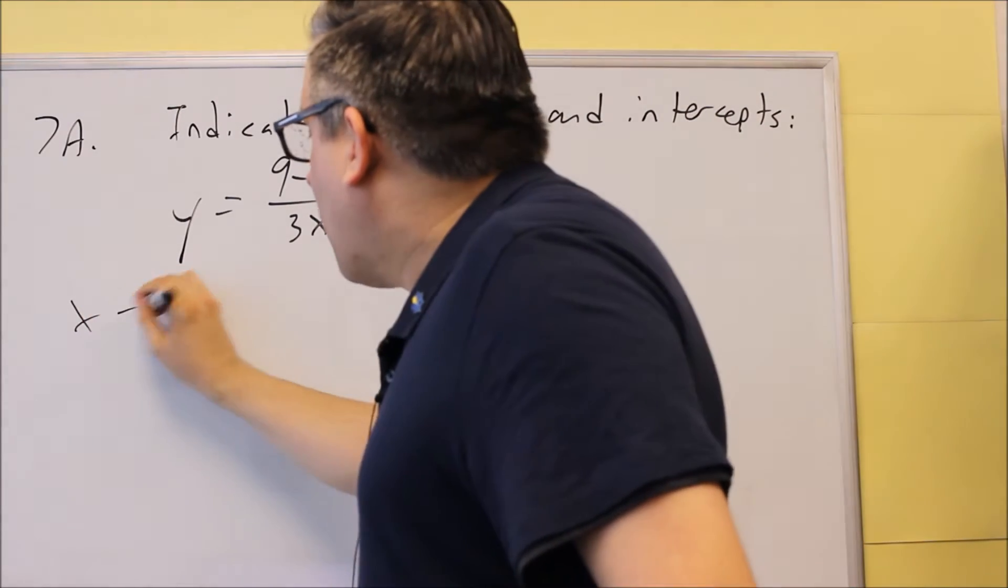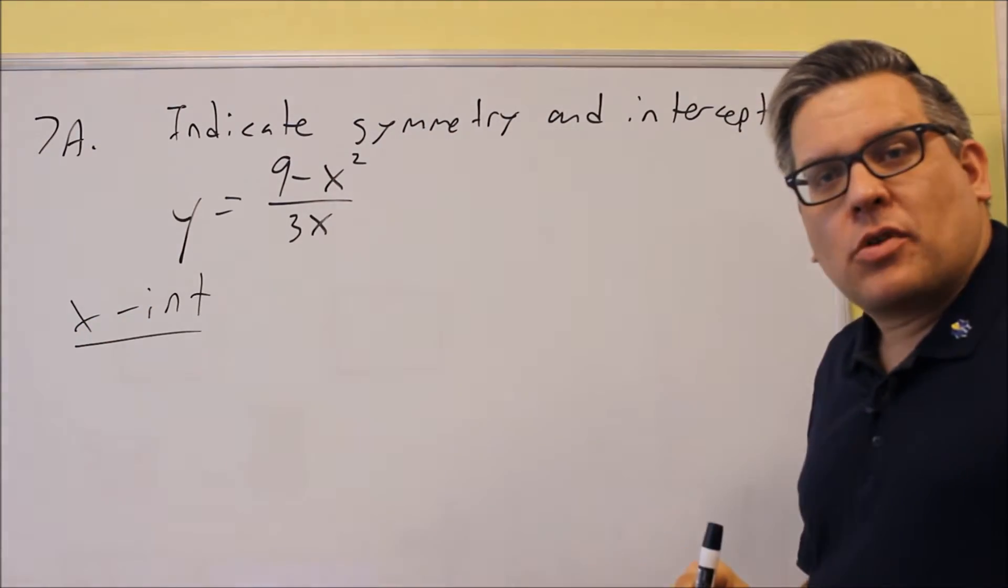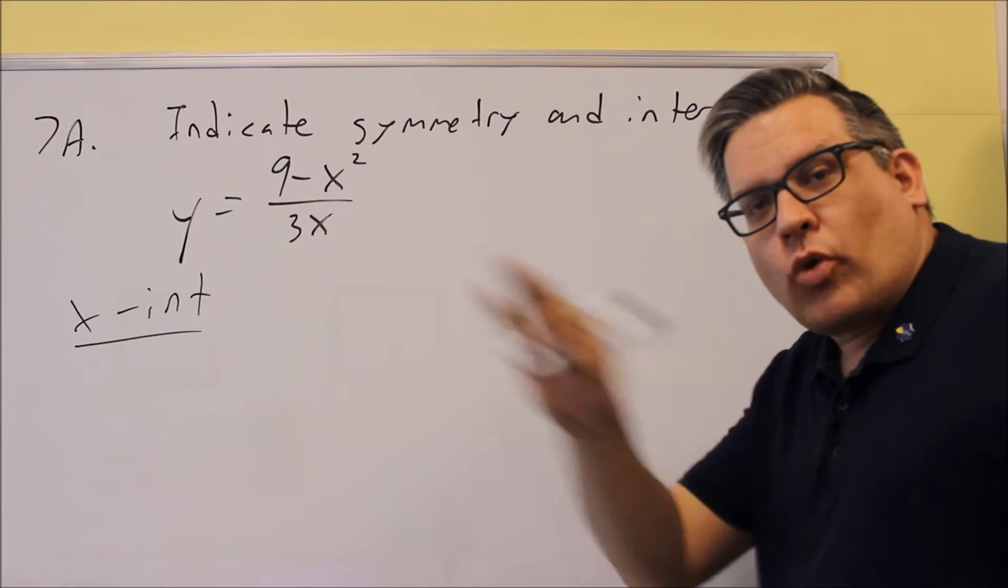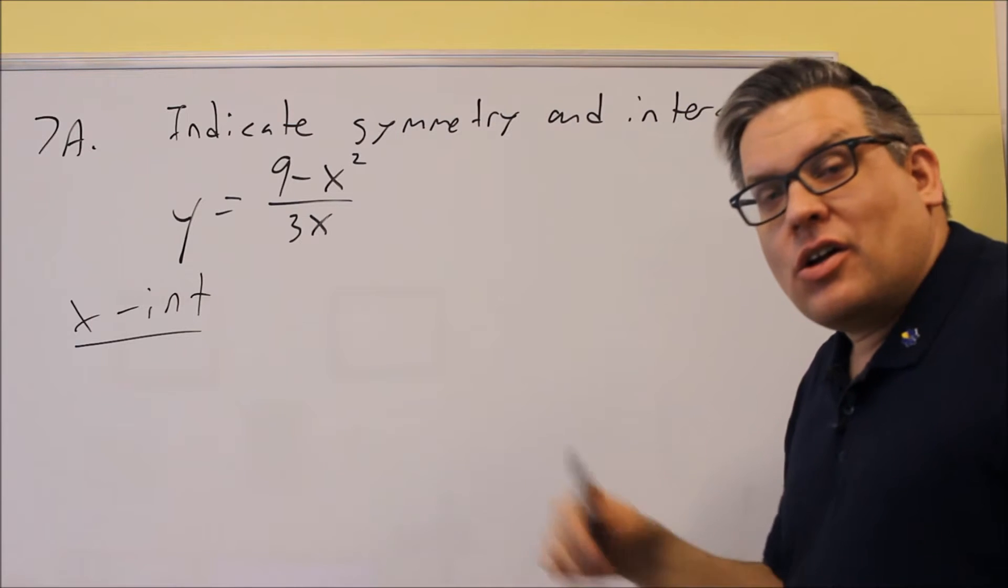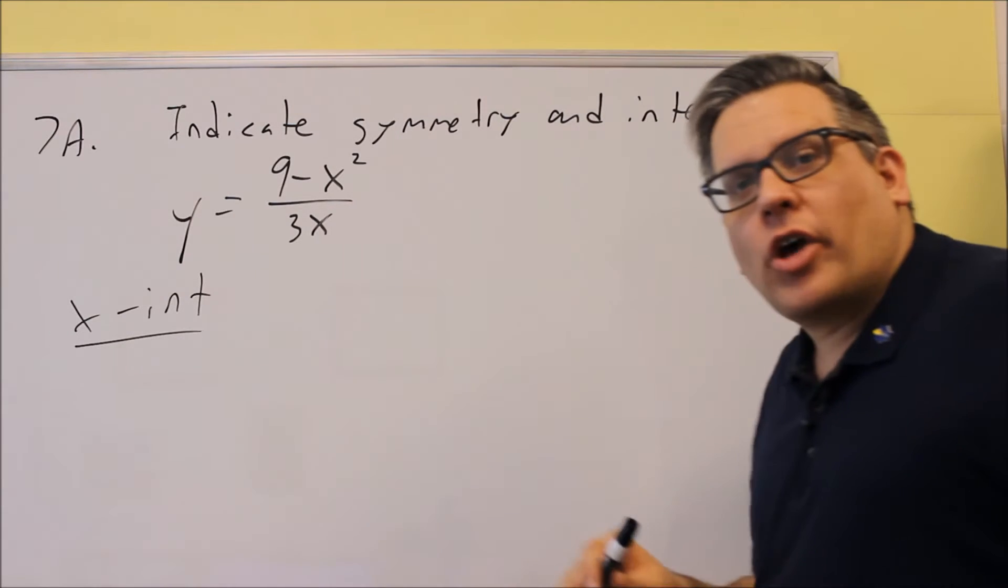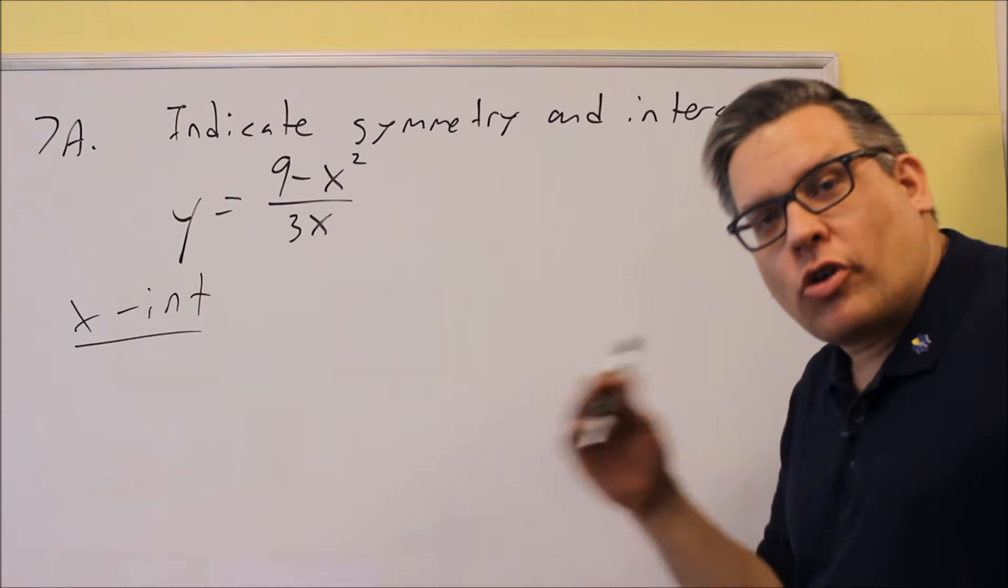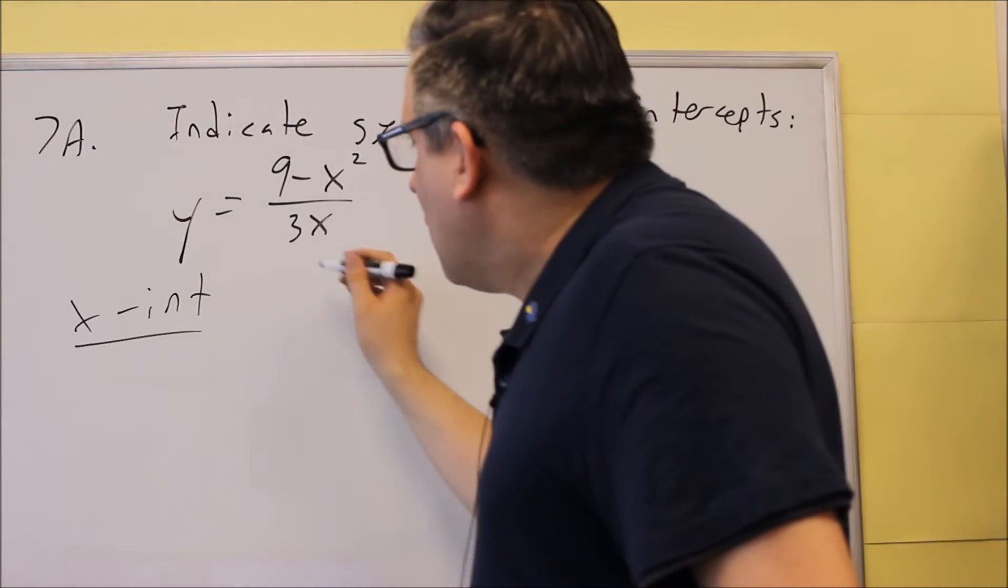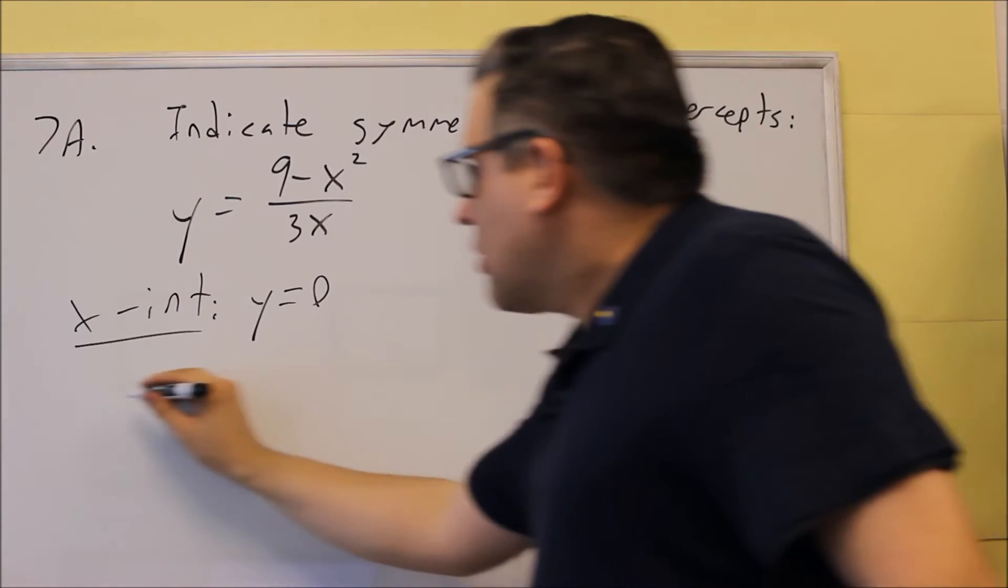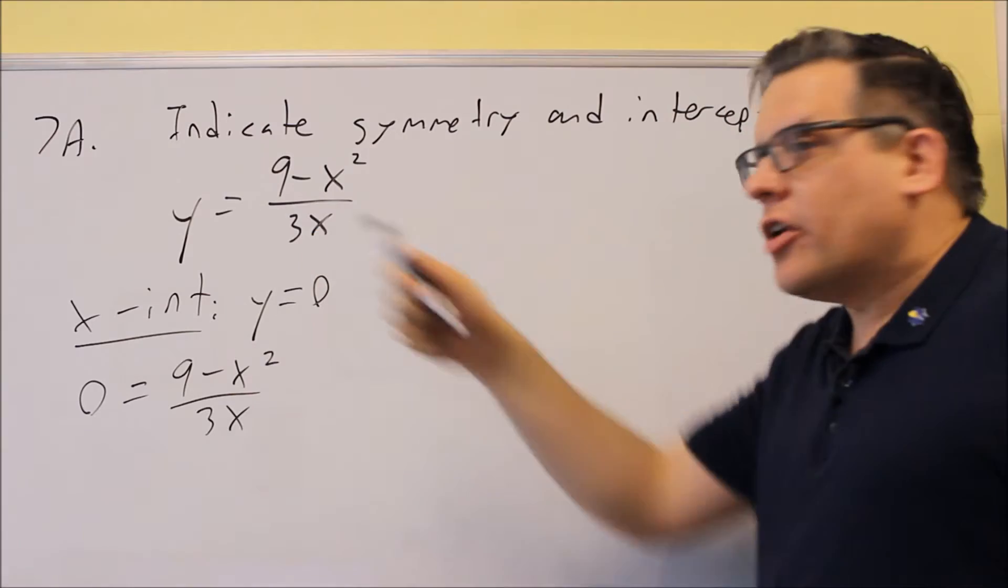So for instance, if I want to find x-intercept, then on my work, I'm going to put x-intercept so that you can clearly see what steps I'm doing. If I just had random numbers all over the page on this answer key, you wouldn't be able to follow it and you'd have all kinds of questions. So for this x-intercept, the procedure is you're going to put a zero in for y. So I have 0 = (9 - x²)/(3x), putting a zero in for the y.